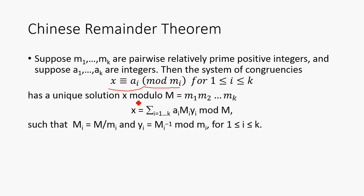This is going to have a unique solution called x modulo m, where this big M is just the product of all those smaller moduli. So that means x is going to be equal to the sum of a sub i times M sub i times y sub i, modulo M.